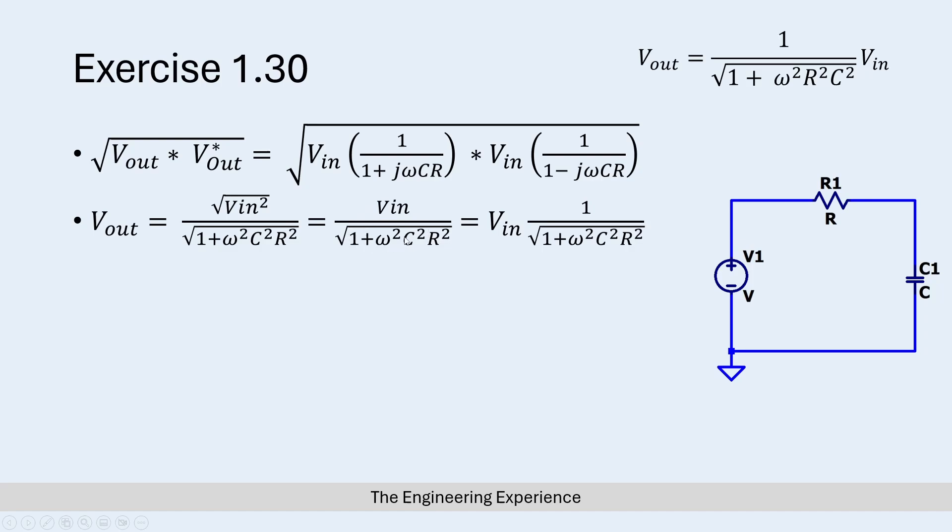Finally, I'm just taking out the V_in on the outside of the division to make it into the same format as we are given in the question. We get V_out equals V_in multiplied by 1 over the square root of 1 plus ω²C²R².